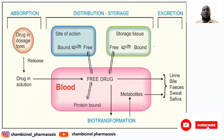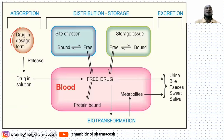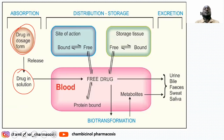This diagram elaborates the four aspects of the pharmacokinetic parameter. For example, if you take a drug in solid dosage form via the oral route, it must undergo disintegration and dissolution to release the drug in solution form. The solution form of the drug in the GIT then undergoes absorption into the systemic circulation, which is the blood.